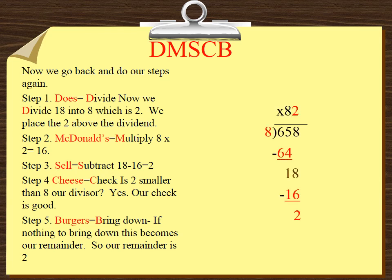Step 3, Sell equals subtract: 18 minus 16 equals 2. Step 4, Cheese equals check: Is 2 smaller than 8, our divisor? Yes. Step 5, Burgers bring down: If nothing to bring down, this becomes our remainder. So our remainder is 2.